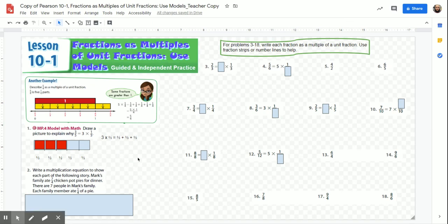For this next one, it says write a multiplication equation to show each part of the following story. Mark's family ate seven-fourths chicken pot pies for dinner. There are seven people in Mark's family. Each family member ate one-fourth of the pie. Once again, we're looking at another situation where we have an improper fraction. Our numerator is greater than our denominator. But the denominator is important because it tells us how much the whole is. The whole is going to be made of fourths.